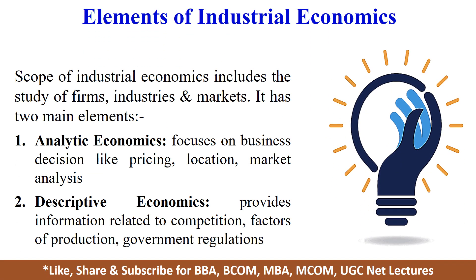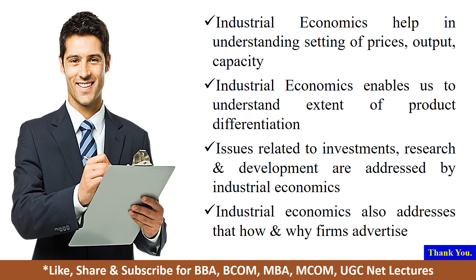Industrial economics has two main elements: analytic economics and descriptive economics. The analytic part focuses on business-related decisions like pricing, choice of location, and decisions related to market analysis. The descriptive economics provides information to the industry, which can be related to competitors, factors of production, government rules, and other regulations.